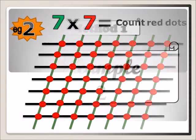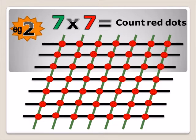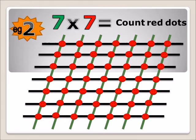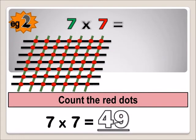Example two: seven times seven. You rule seven lines straight and then seven lines across, and then you count the dots where they meet. This is called the sticks or lines multiplication method — one way to learn multiplication very easily. When you count all the dots you will get forty-nine. Seven times seven equals forty-nine.